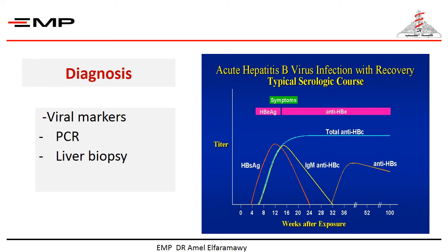Individuals who are immune by vaccination are positive for hepatitis B surface antibody but negative for hepatitis B core IgG. Chronic infection is defined as the presence of hepatitis B surface antigen for at least 6 months. Vertical transmission to newborns is documented by positive hepatitis B surface antigen.